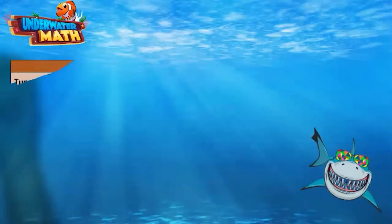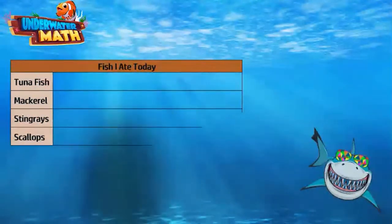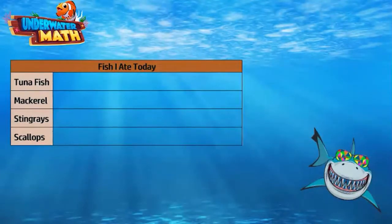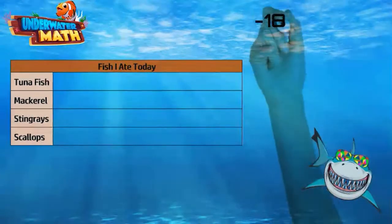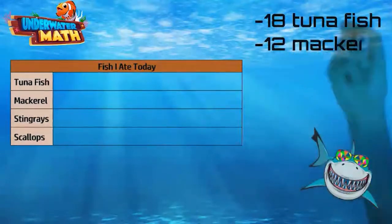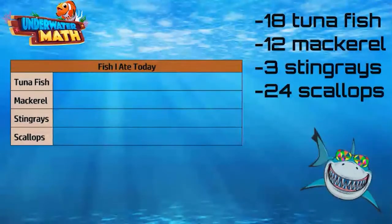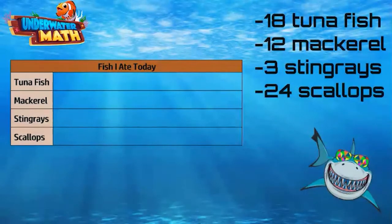Now let's look at making our own pictograph. Let's make a pictograph on types of fish I ate today. I had 18 tuna fish, 12 mackerel, 3 stingrays, and 24 scallops. I'm so stuffed I can barely zip my pants! Sharks don't wear pants — that's why I can't zip them, and I don't have hands.